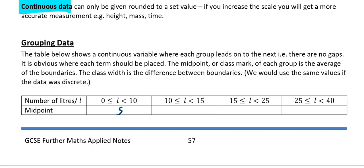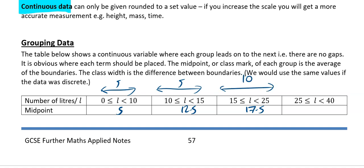Next one: lower boundary is 10, upper boundary is 15 — 10 plus 15 divided by 2 is going to give you 12.5. Next one is 15 plus 25, then divide by 2, giving you 17.5. There's a mistake in that one — it should have been 15 plus 25 and then divide by 2, which is going to give you 20.